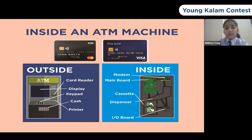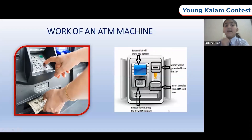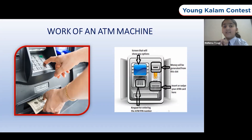Then comes the printer which prints the receipt of the amount we have taken out. Then there is the power supply that supplies the external power to the ATM. Then there is the I/O board — the circuit that controls the communication between the processor and the internet or the phone line. Finally, we have the modem which executes the communication from the processor through the internet. My dad also told me that the PIN — personal identification number — provides security in case the card is lost or falls into wrong hands.